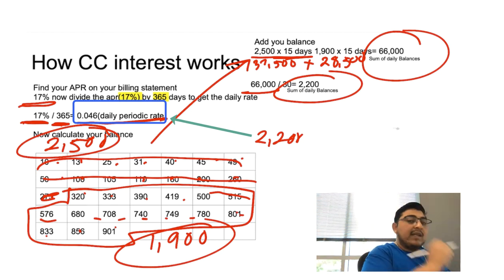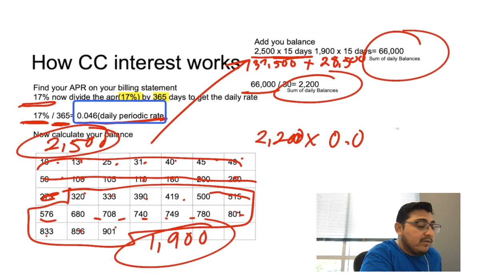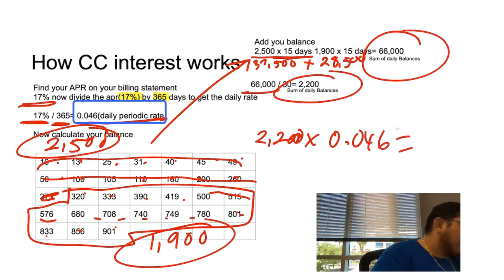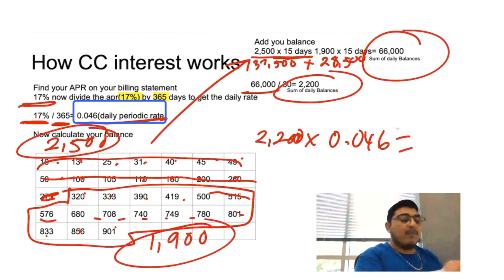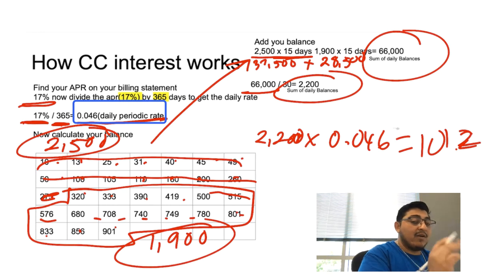Remember the daily periodic rate was 0.046. We're going to multiply that by 0.046 and it should give us a total of 101.2. Now don't freak out, we're not done yet.